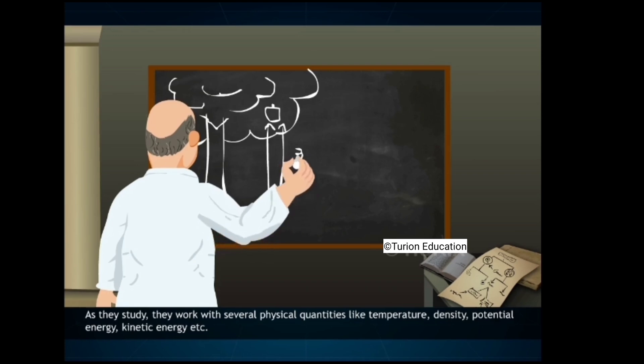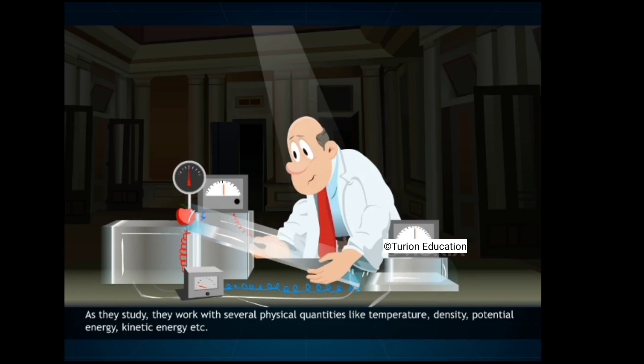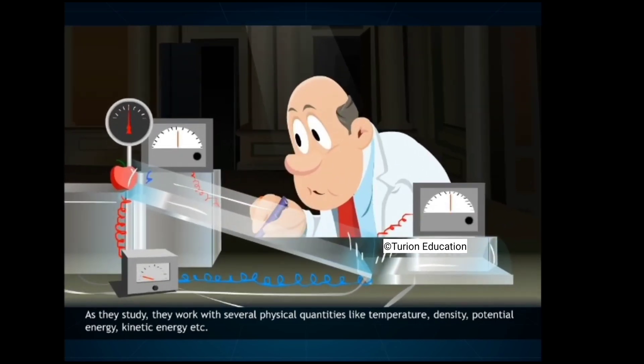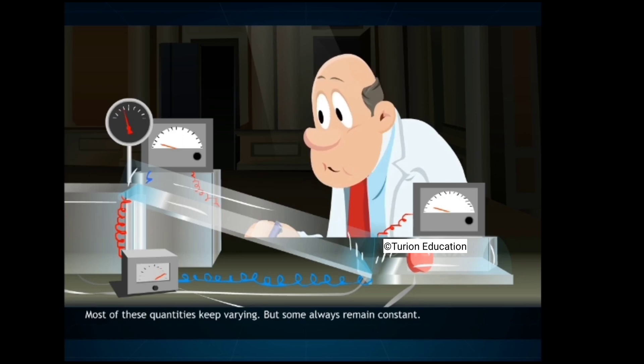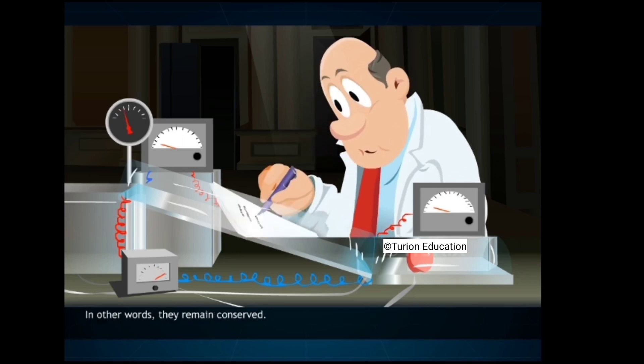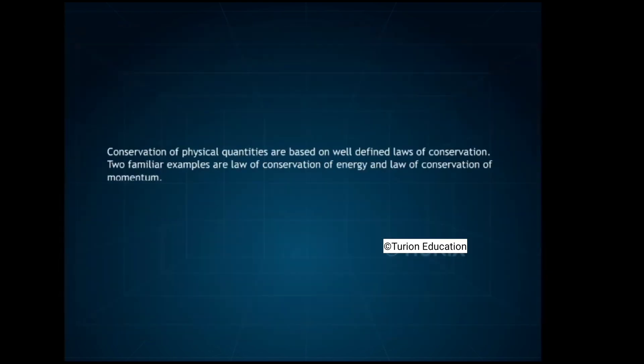As they study, they work with several physical quantities like temperature, density, potential energy, kinetic energy, etc. Most of these quantities keep varying, but some always remain constant. In other words, they remain conserved. Conservation of physical quantities are based on well-defined laws of conservation. Two familiar examples are law of conservation of energy and law of conservation of momentum.